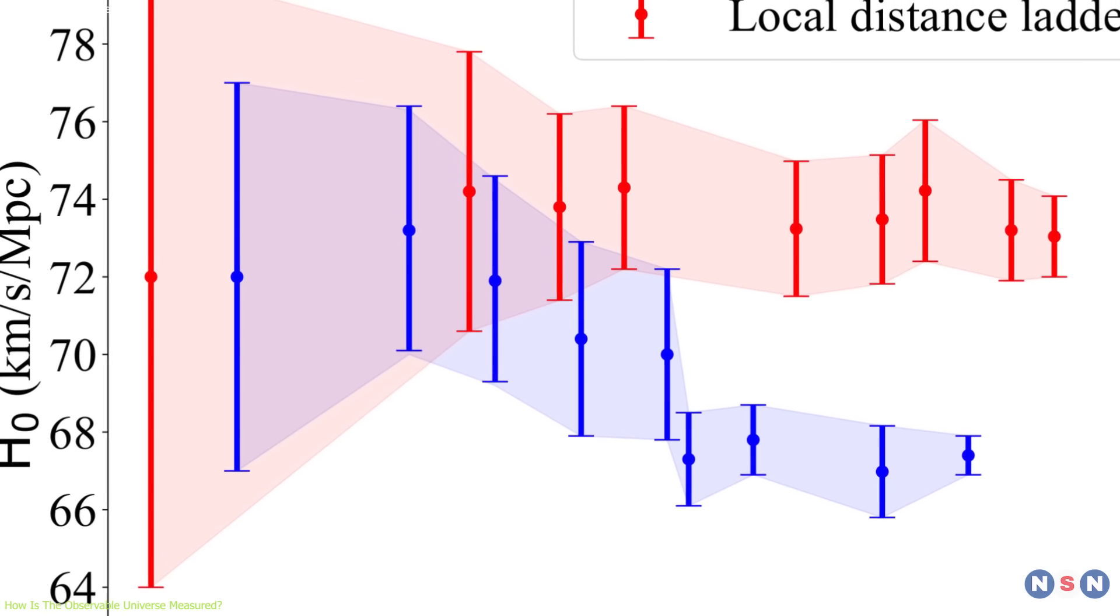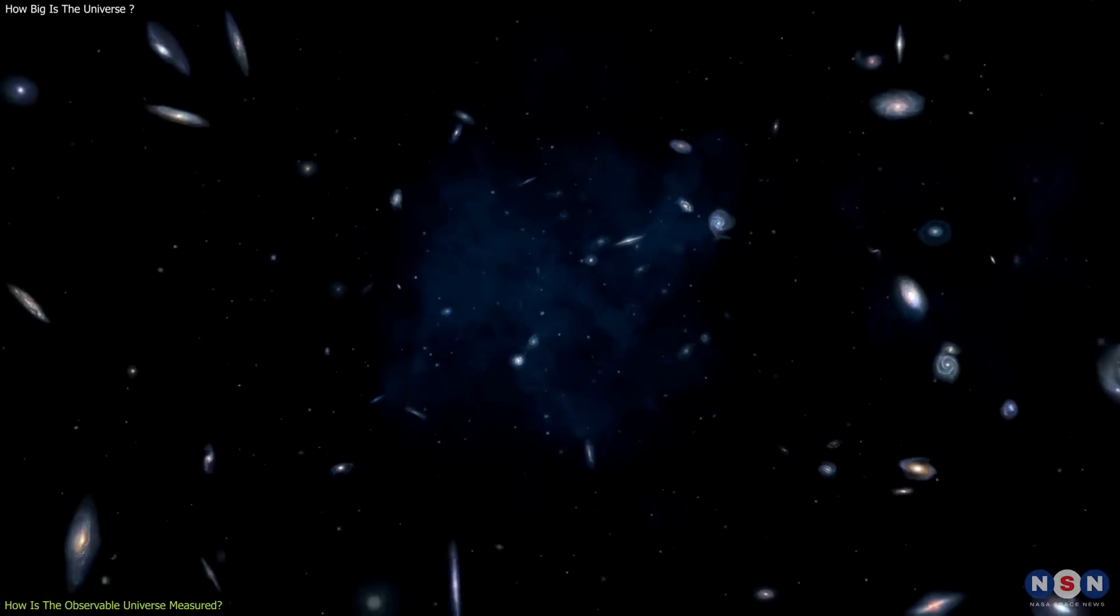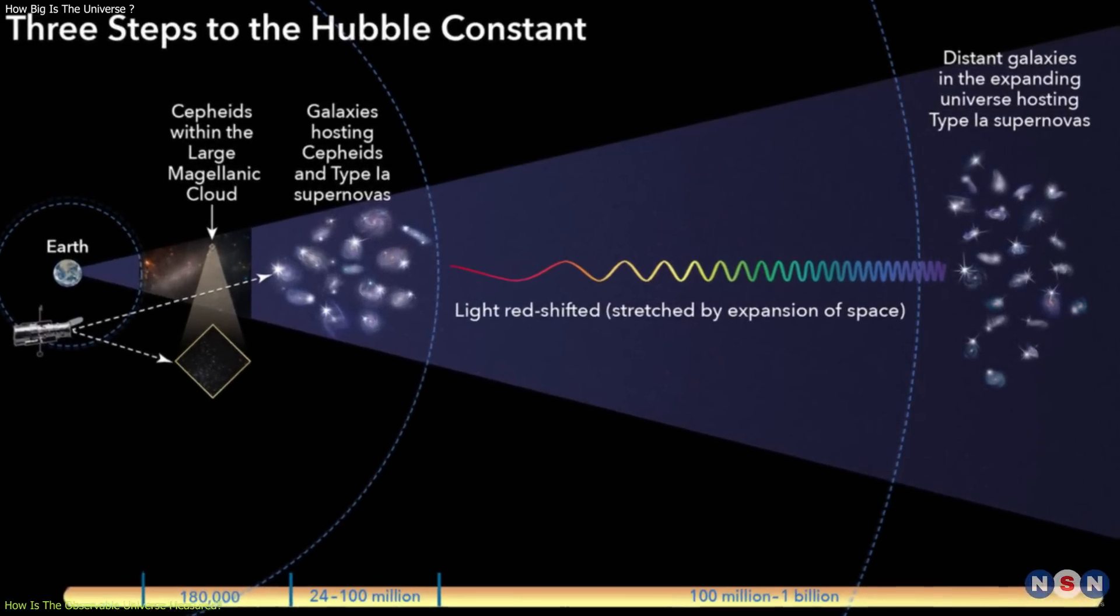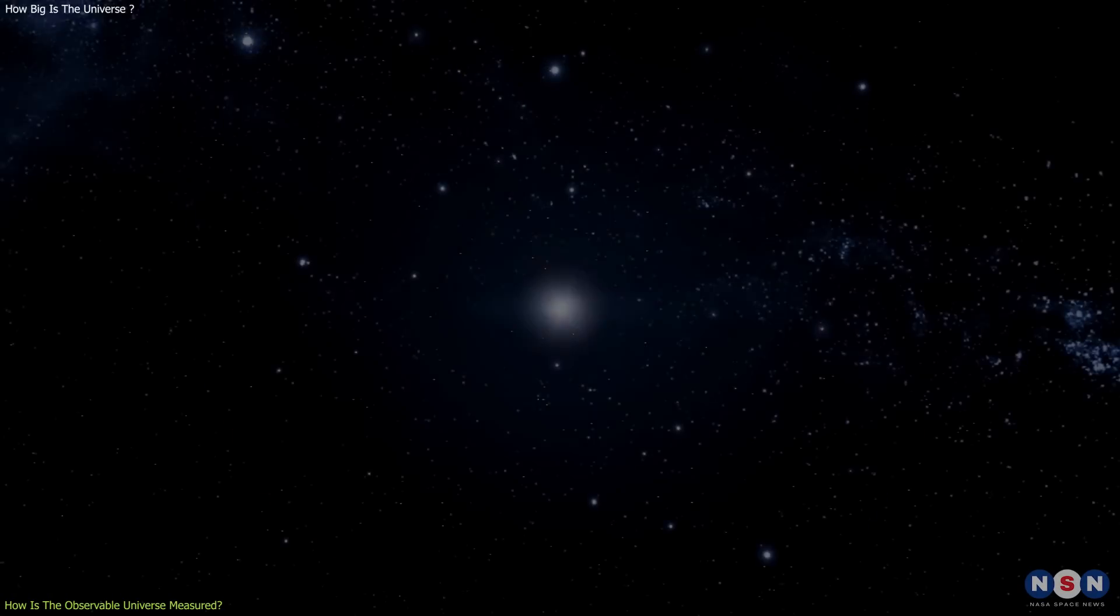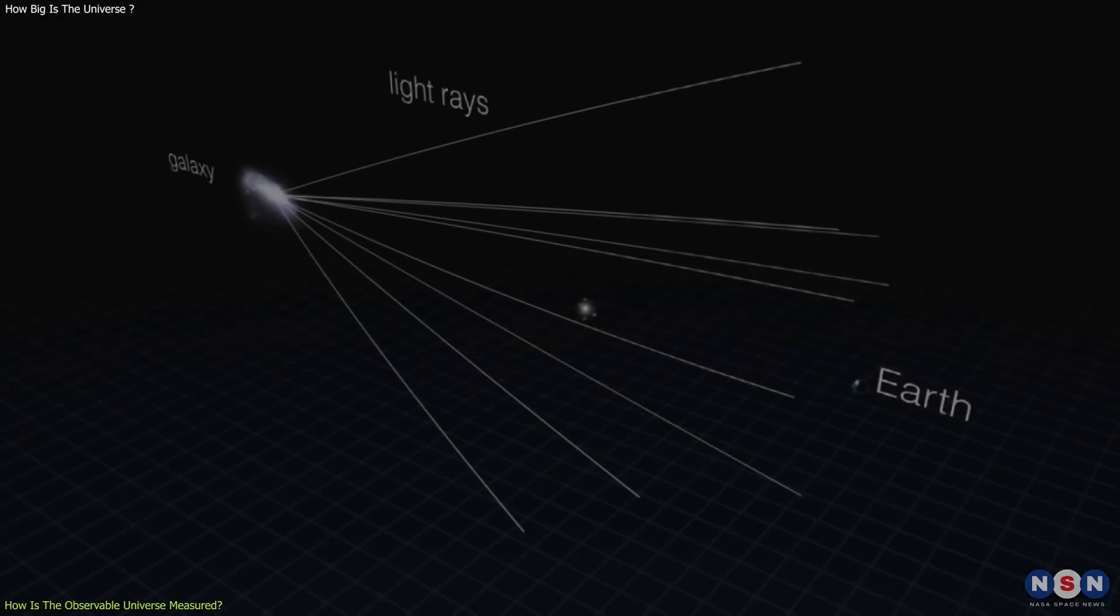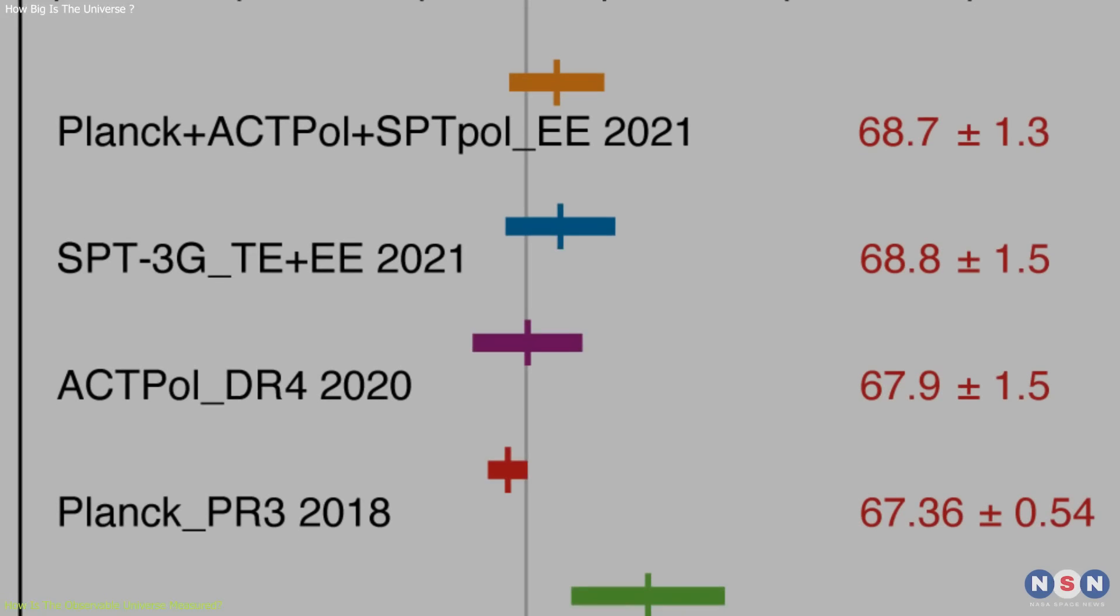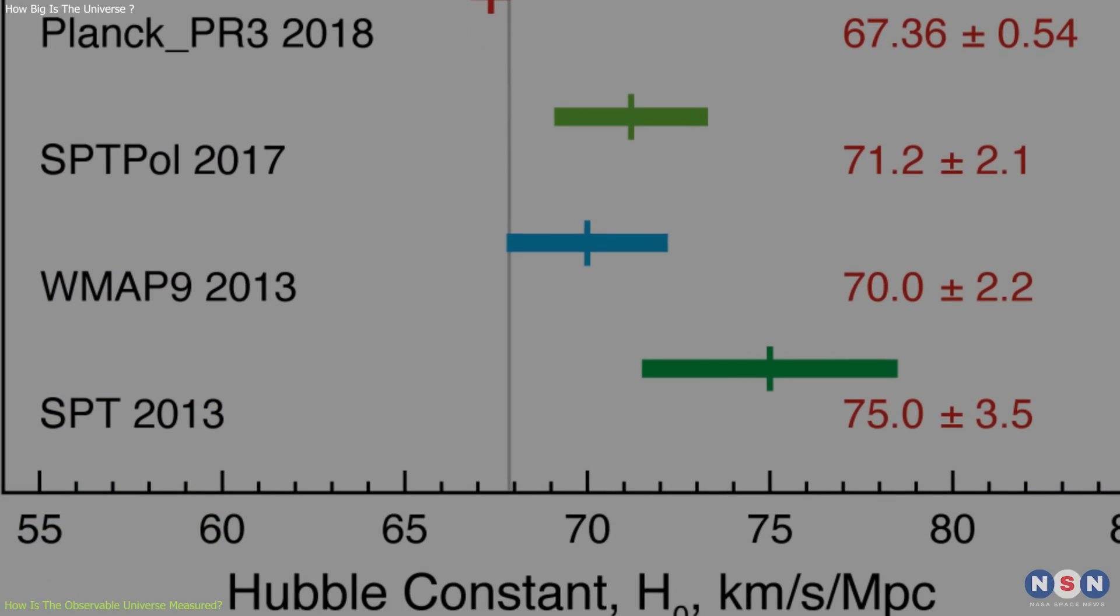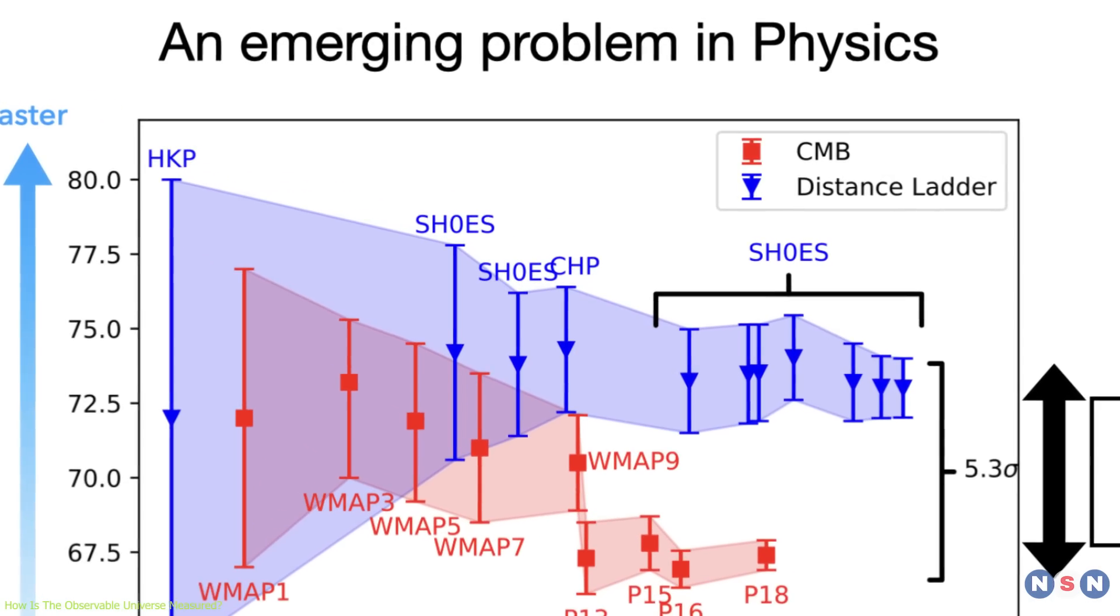Now, you might think that measuring the Hubble constant is easy, since we can just observe how fast the galaxies are receding from us. But it is not that simple, because there are different methods to measure the Hubble constant, and they do not always agree with each other. Some methods use the CMB data, some use the supernovae, which are exploding stars, some use the gravitational lensing, which is the bending of light by massive objects, and some use other techniques. Each method has its own assumptions and uncertainties, and the results can vary by a few percent. This discrepancy is known as the Hubble tension, and it is one of the biggest puzzles in modern cosmology.